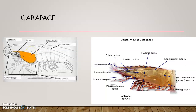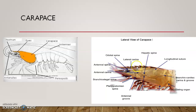Anteriorly, the carapace is projected into a pointed, serrated structure called the rostrum. This serrated structure has many pointed spine-like projections — similar to the serrated margin of leaves in botany — which is not smooth but has many pointed structures.